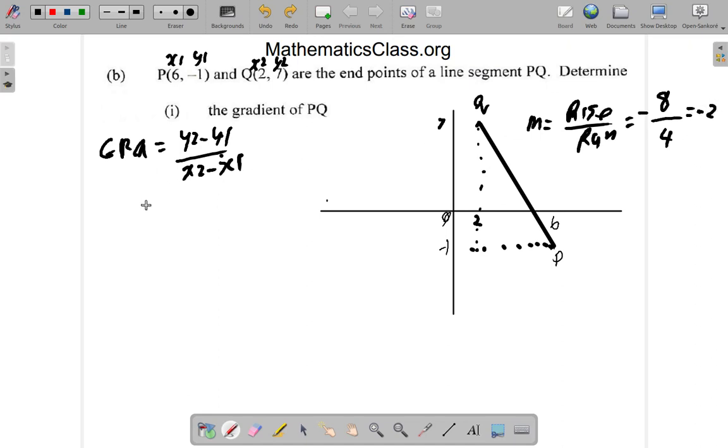So you would rise 8 and run 4. Notice as you go from left to right, you would be falling along the line, so it would have a negative gradient. Now, what that would mean is you have -8 over 4 is -2. Let's see how well that works out. y2 is 7 minus y1 is -1 over x2 is 2 minus x1 which is 6. So 7 minus -1 is 7 plus 1 over 2 minus 6. You have 8 over -4, and that gives you -2. Same thing. Was -2 what you got?